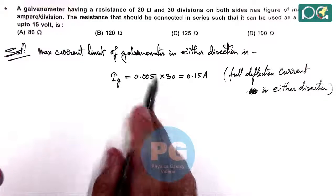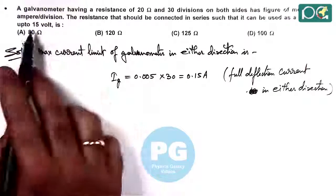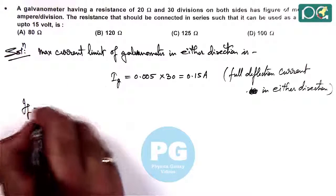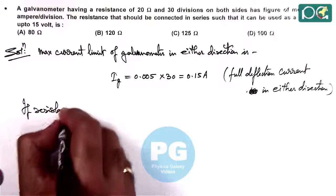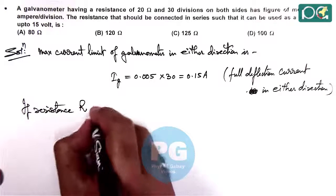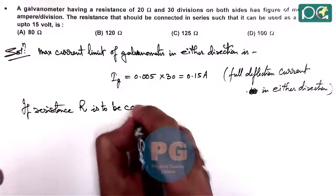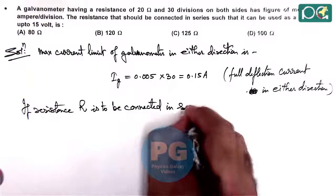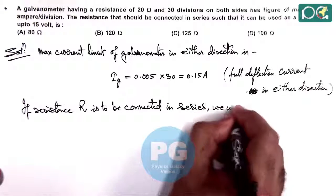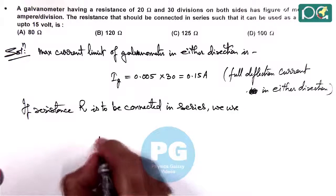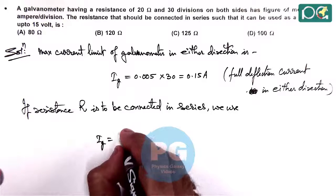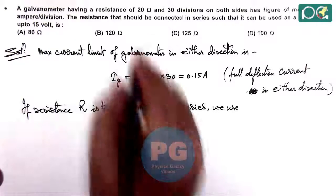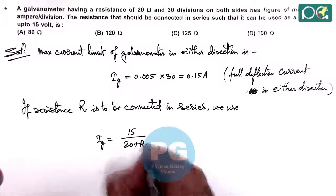So here we want the full deflection to be there when 15 volt voltage is connected. So if resistance R is to be connected in series, we use Ig should be equal to the maximum range 15 volt divided by the resistance of galvanometer which is 20, this is 20 plus R.